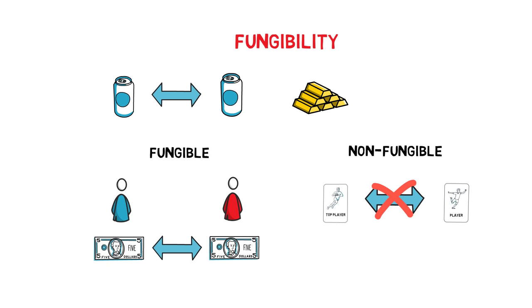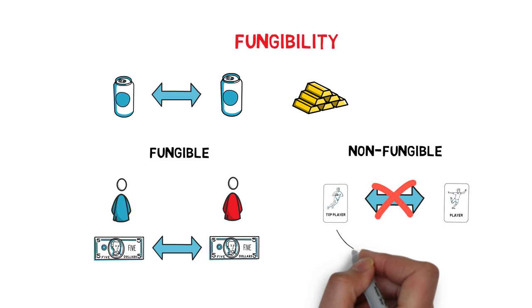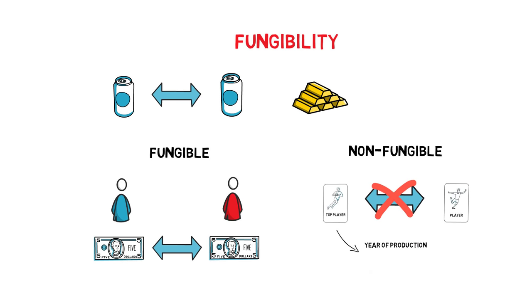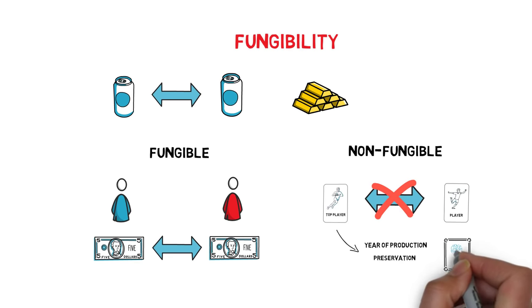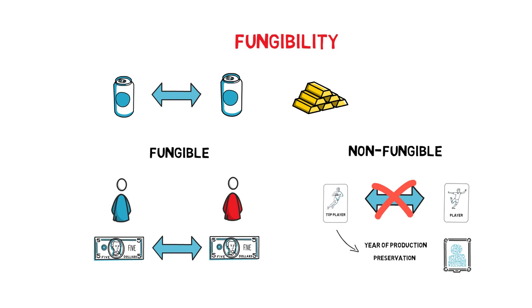On top of that, even when considering two exactly the same cards, other factors such as the year of production or how the card is preserved can make a difference. An extreme example of something non-fungible is a piece of art. A painting, for example, is usually created as only one original copy.